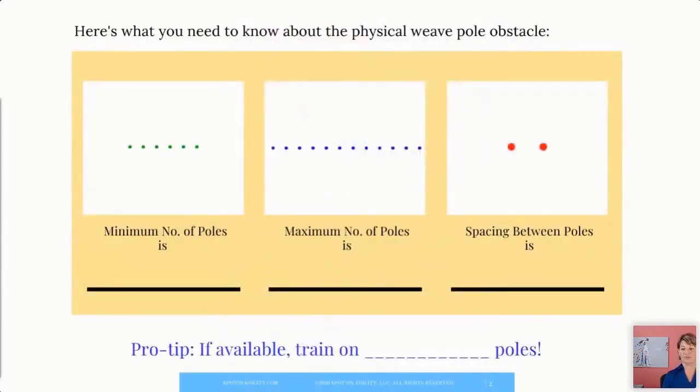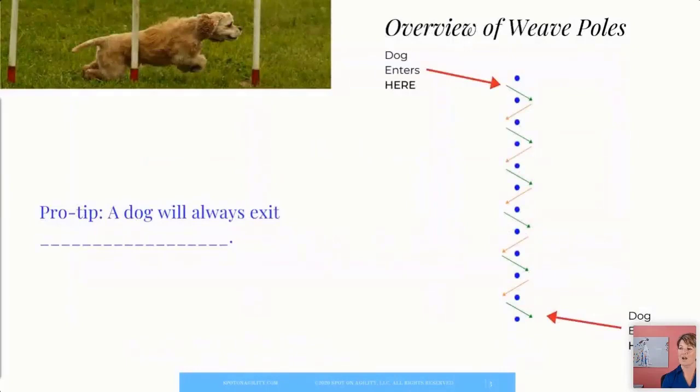Alright. So here's kind of a bigger picture for those of you that weren't able to download that PDF. A minimum of six poles, a maximum of 12 poles, and the spacing is 24. Also, for those of you that may be new to agility, this graphic is from what they call a course designer program. And eventually, you'll see course maps. And this is what the weave poles look like on the course maps, the either six or the 12.